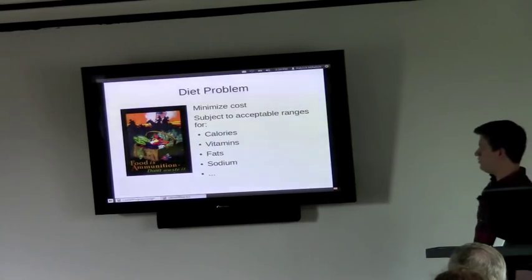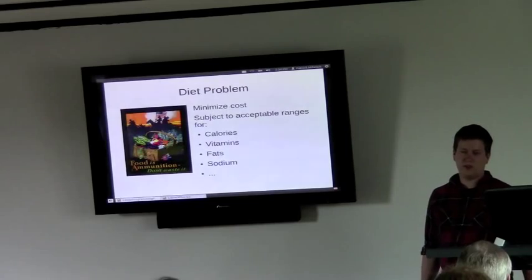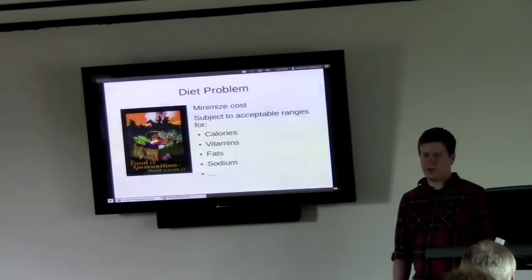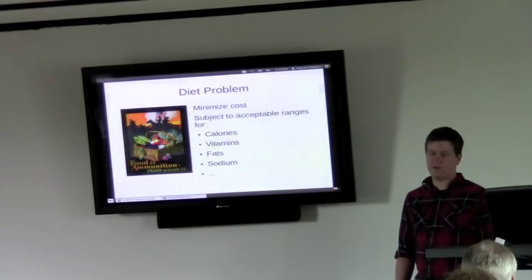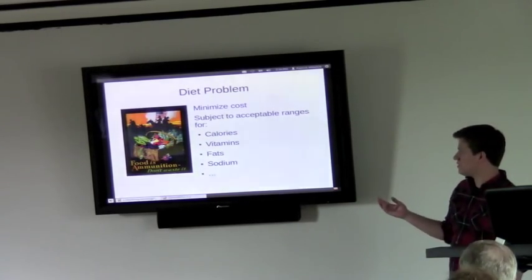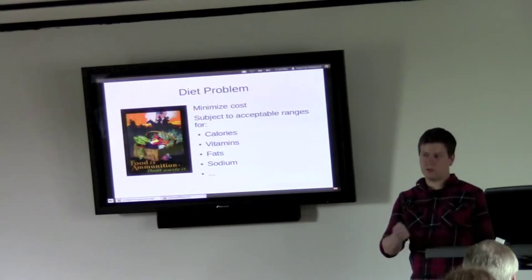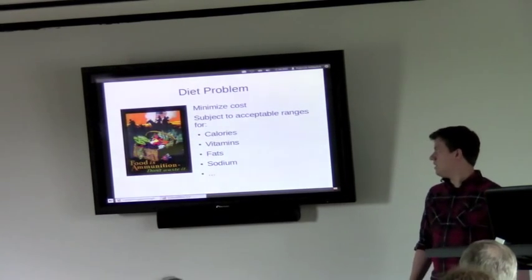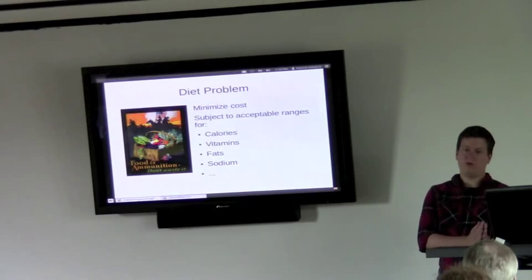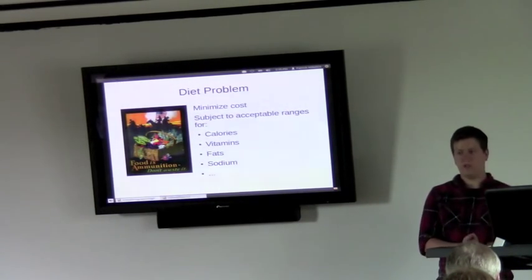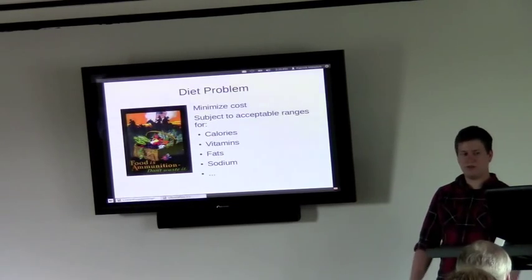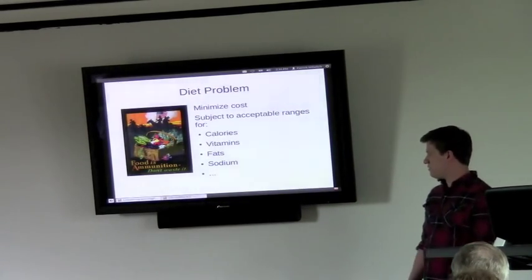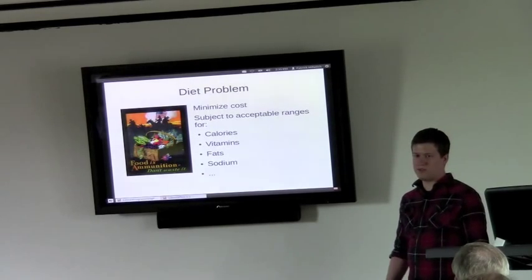The first one is you can choose your optimal diet. So let's say that you have a database of foods that you can buy. Each food has some price, and you have detailed nutritional information for each one. So the objective function here is you want to minimize the cost. So you're choosing some amount of each food product, multiplying those by the prices. That's your total cost. And the constraints are that when you add up, say, the amount of vitamin A in each food that you get, that should be in some acceptable range. Same thing for calories, fats, cholesterol, all of those things.